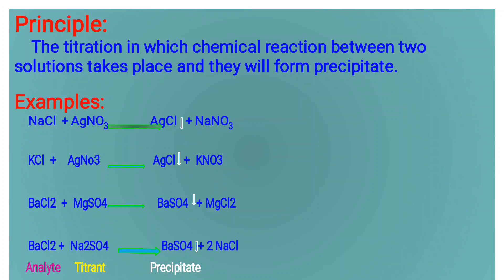Various examples are there. Sodium chloride and silver nitrate gives silver chloride and sodium nitrate. Silver chloride is precipitate. Potassium chloride and silver nitrate forms silver chloride as a precipitate and barium chloride magnesium sulfate gives us a precipitate of barium sulfate.